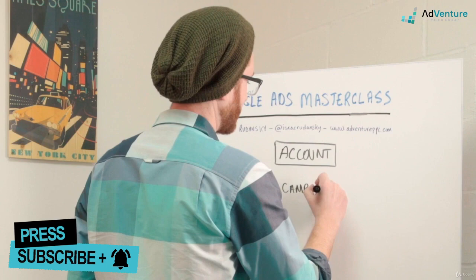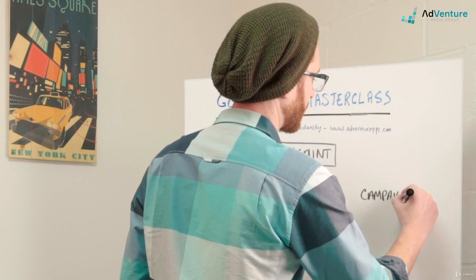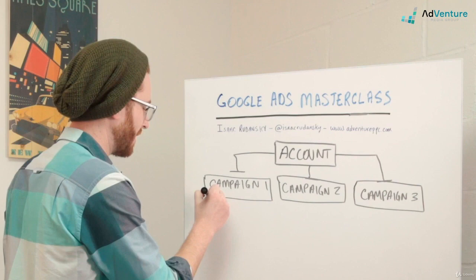The point is campaigns are the next level down. So let's say we have three campaigns here. Within campaigns, you have what's called ad groups. So we're just going to do AG for ad groups. You have another ad group, ad group.